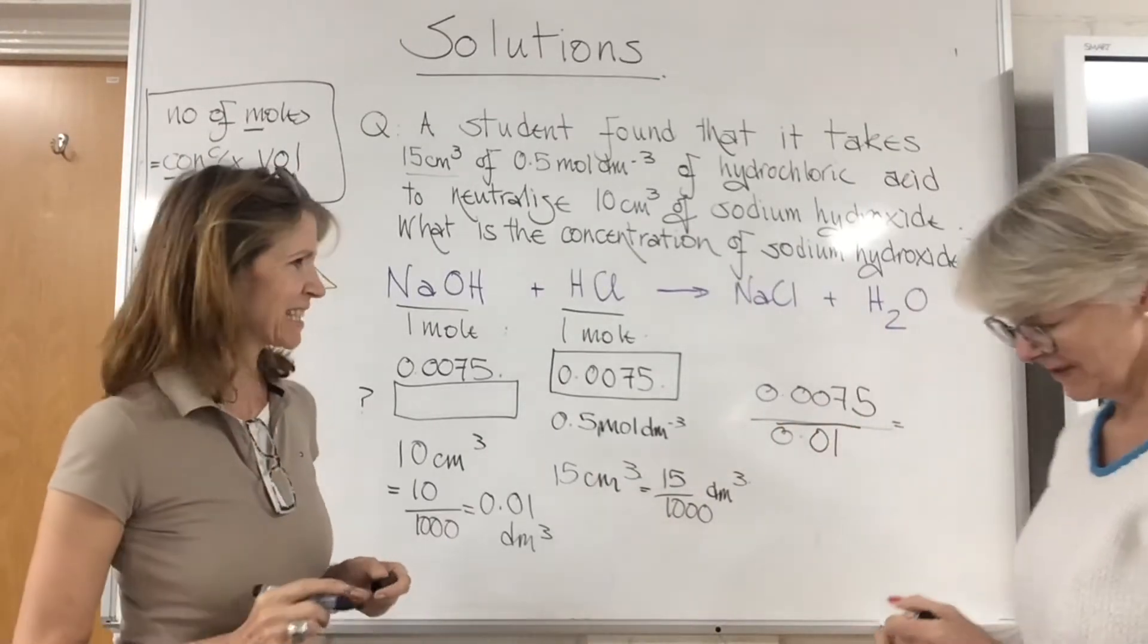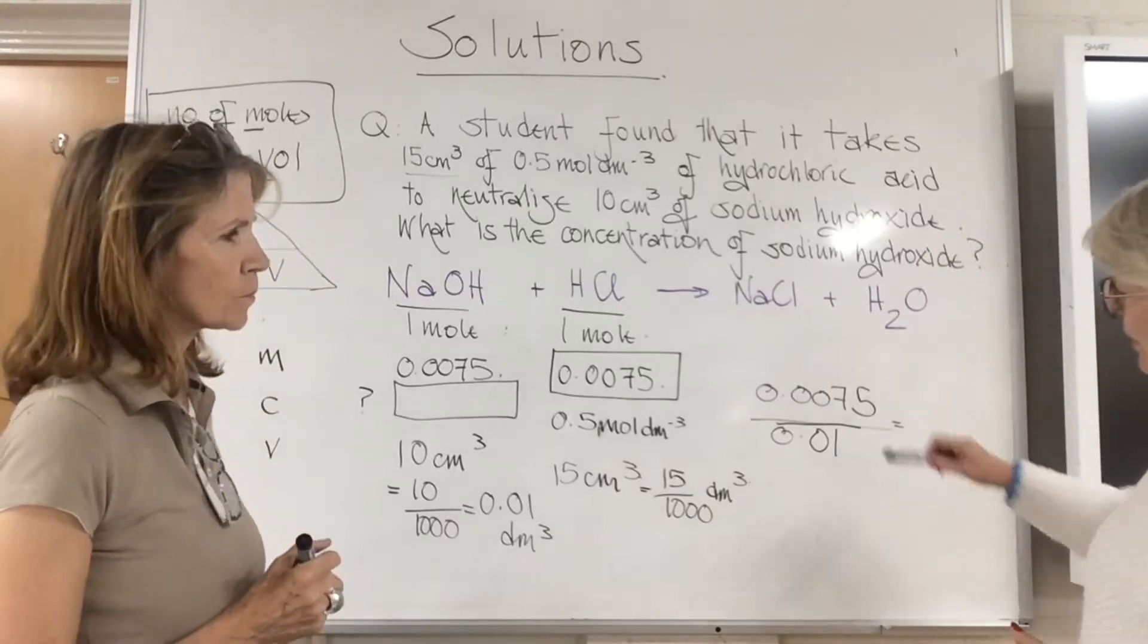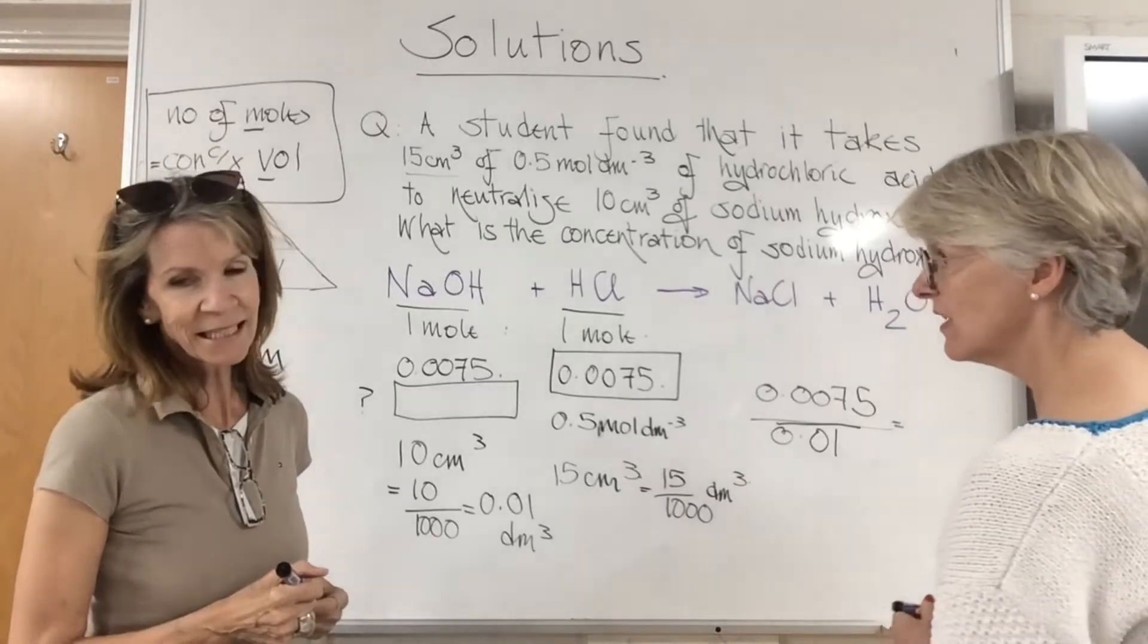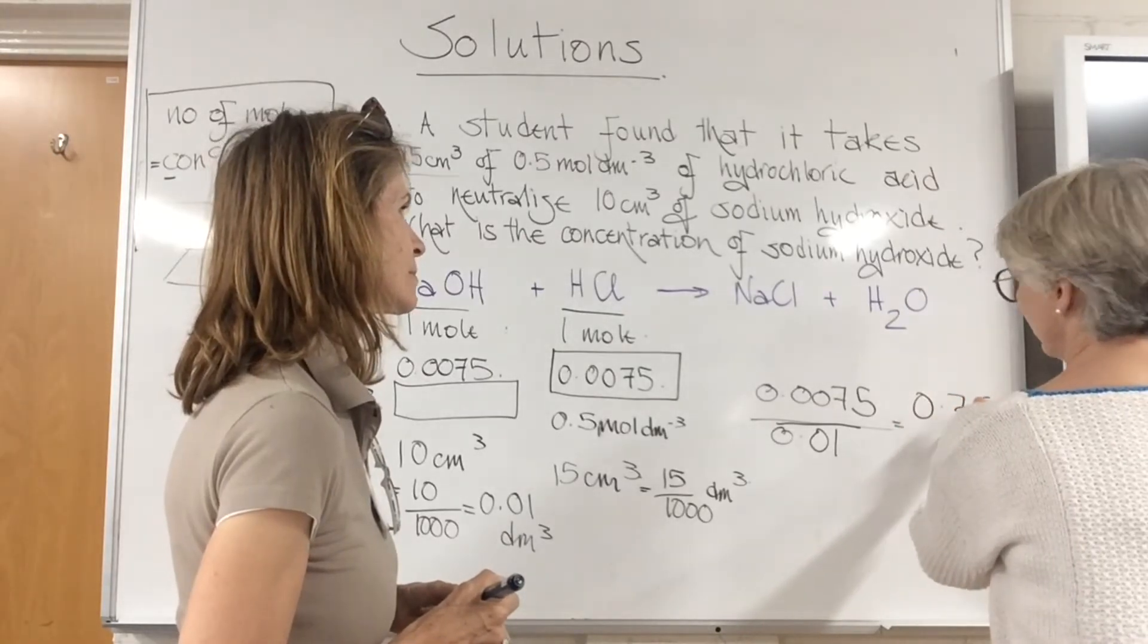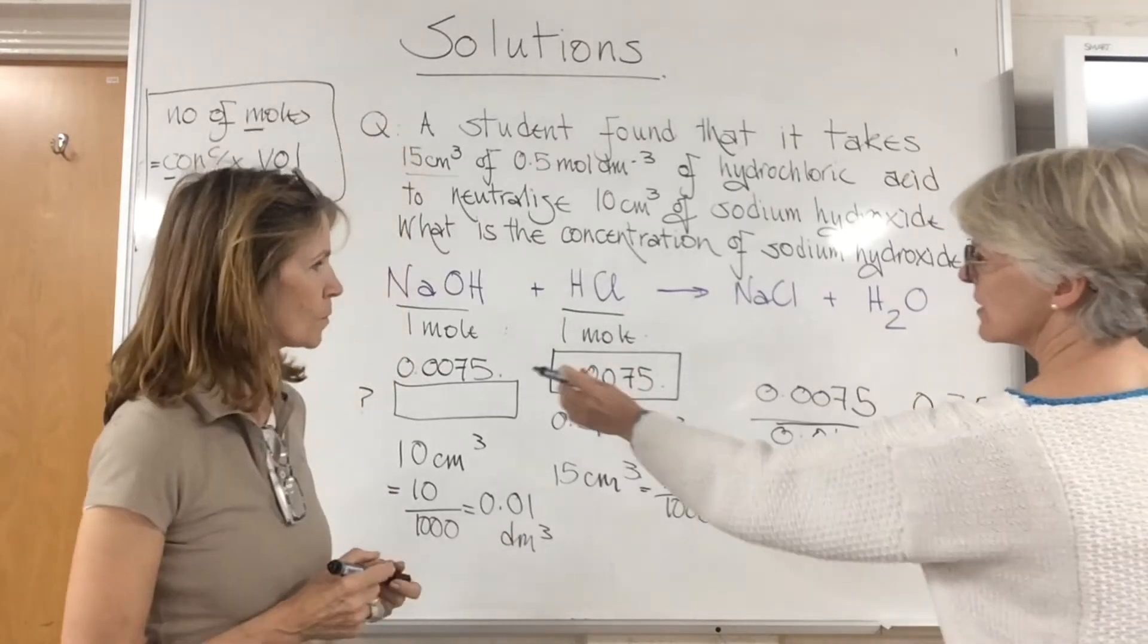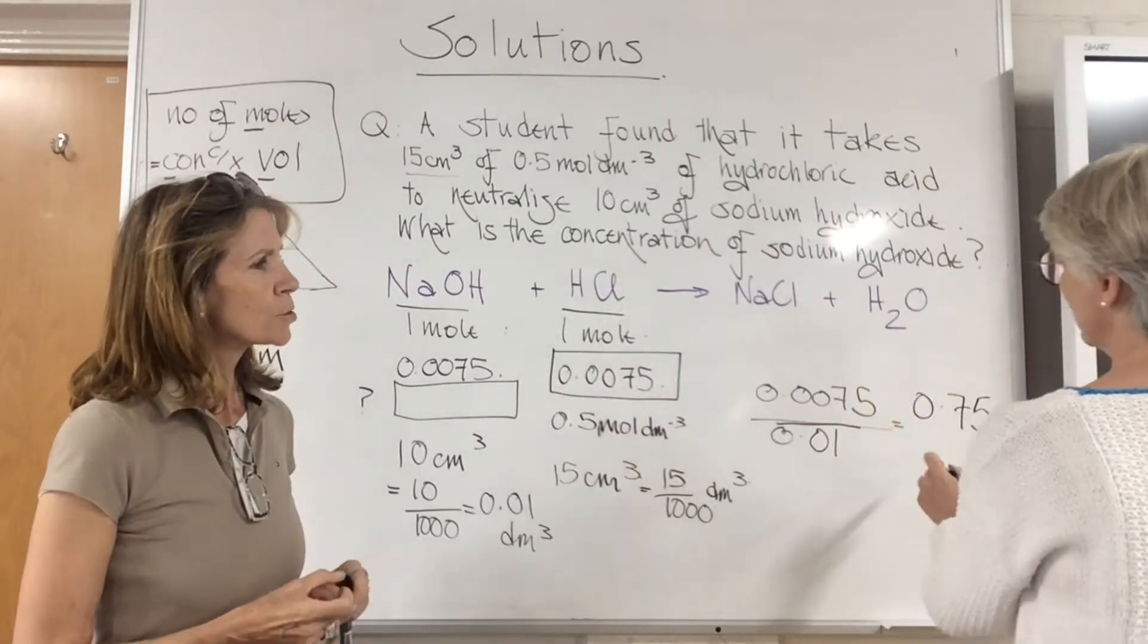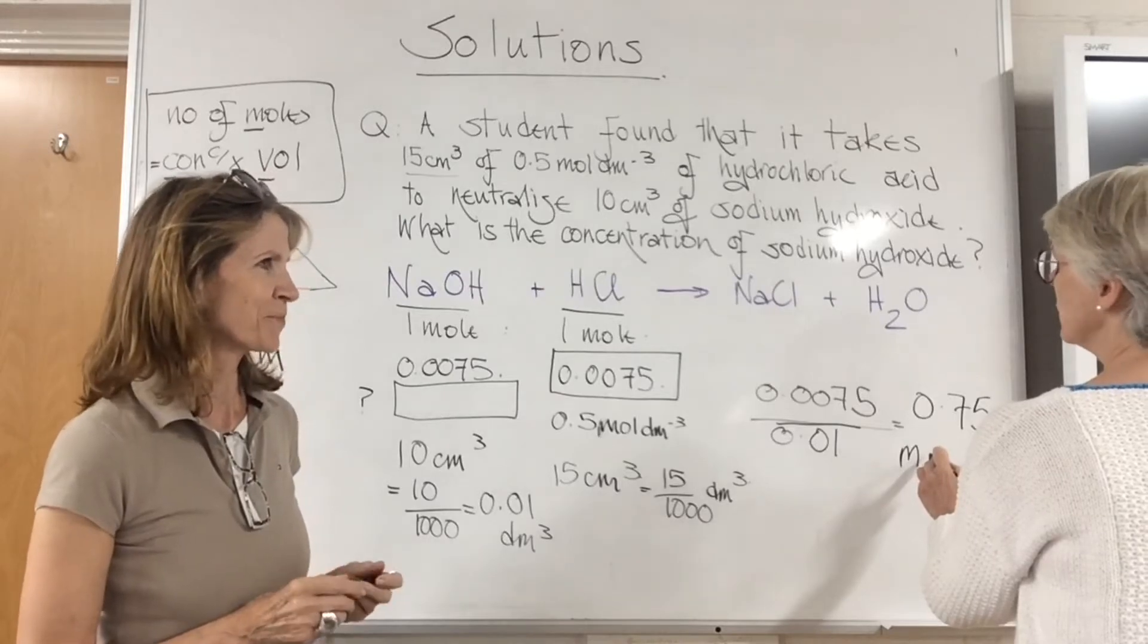Can we do that without a calculator? If not, plug it into your calculator and the answer will be 0.75. Back to the question, it's concentration, so look at the units. It must be moles per dm³, and that's our answer.